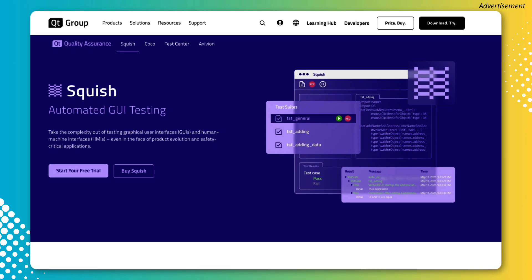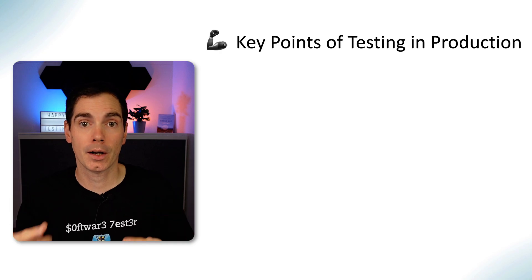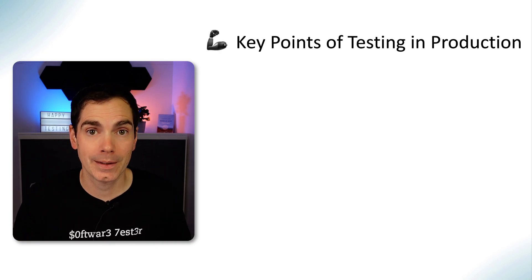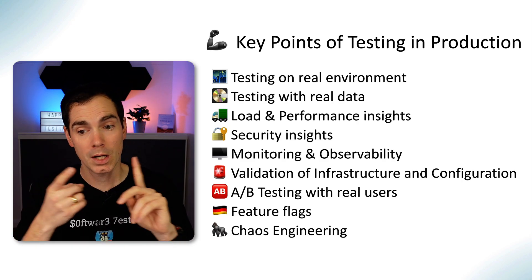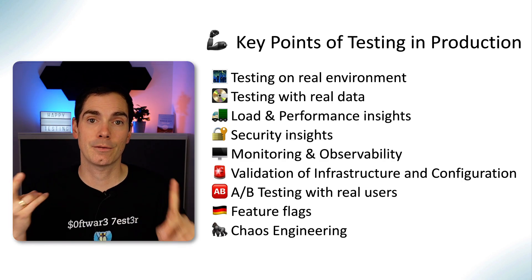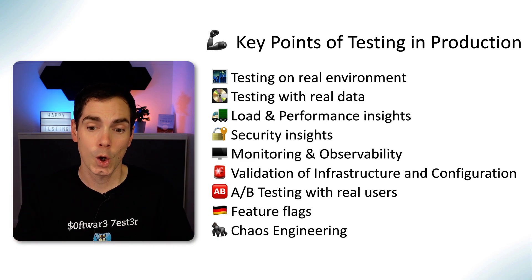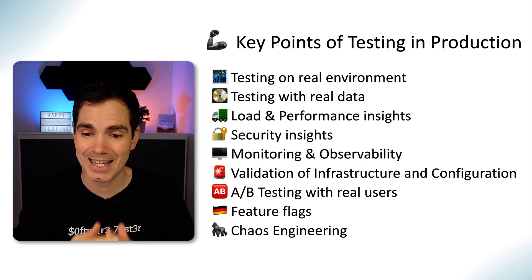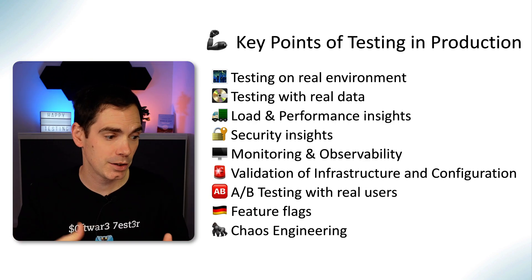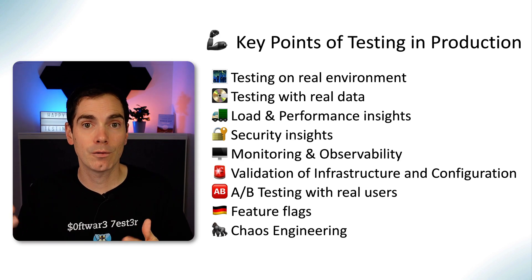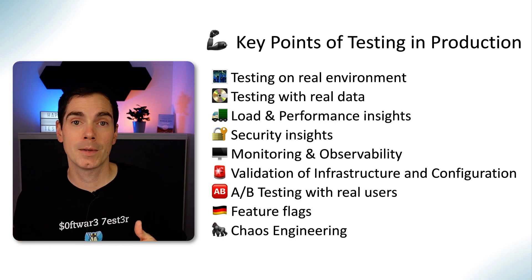So what are the key points of testing in production? Here you can see them all up front. Testing on a real environment — that's the first thing. And you test with real data, which is important to keep in mind when testing on the production system, since you might influence the data that is on the production system.